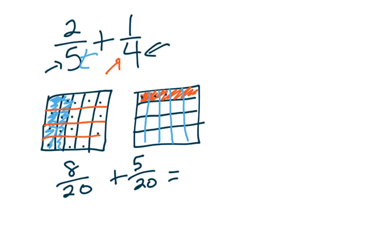And then denominator stays the same. Don't you change that. It's not 40. And eight, nine, 10, 11, 12, 13 twentieths. I cannot simplify that any further. And if you got 13 twentieths, you're on a roll.